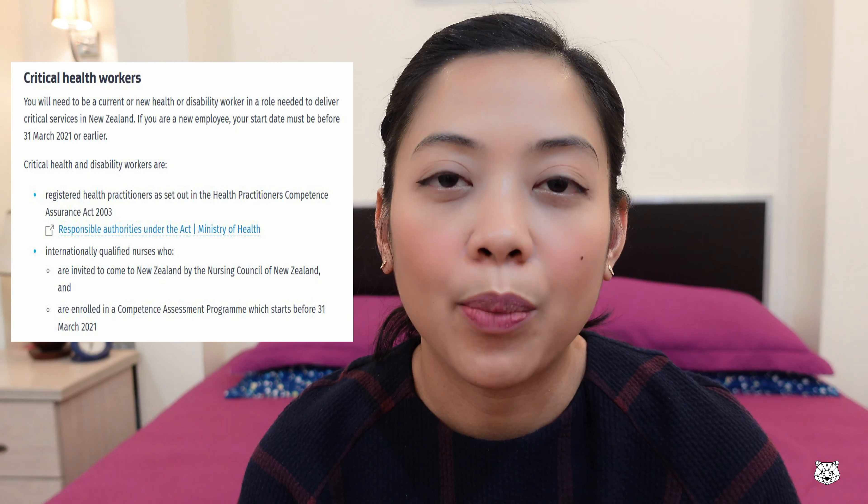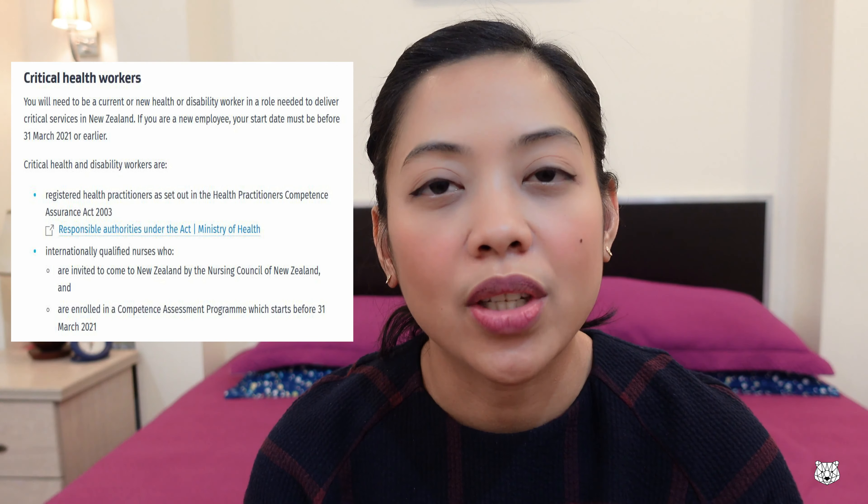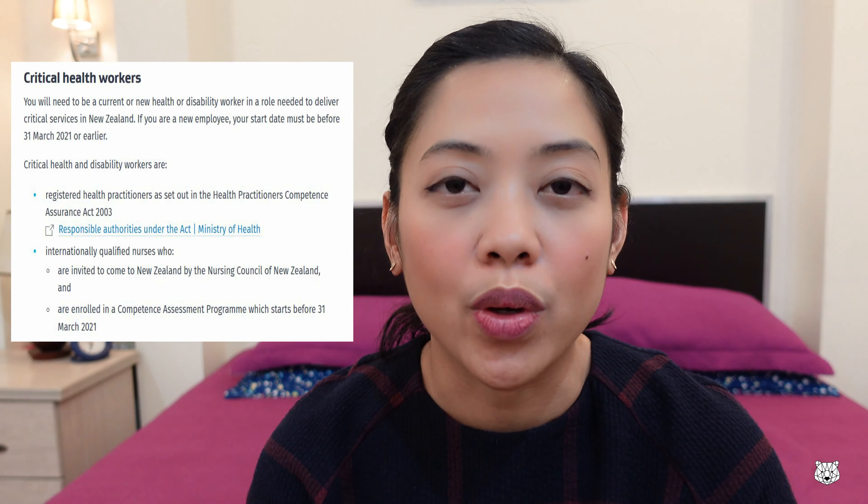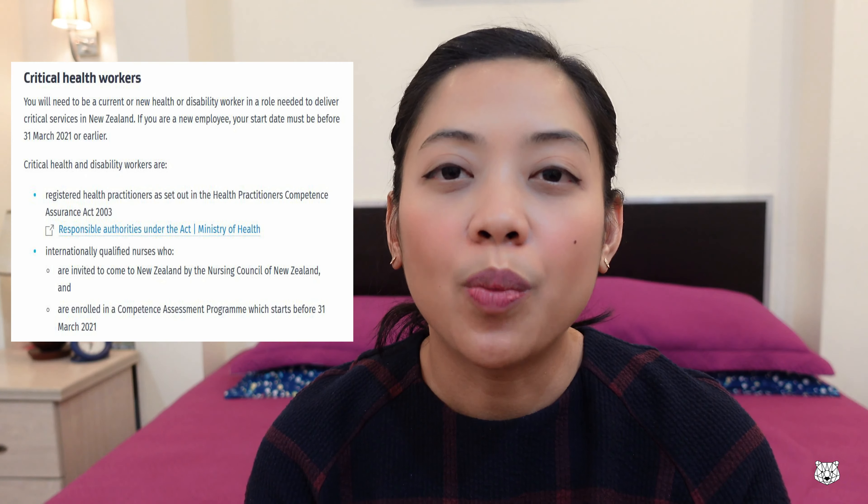You need to always check the Immigration New Zealand website to see if you are eligible to apply for your visa. The schedule on Immigration New Zealand for IQNs who can apply is for those with a Competency Assessment Program starting January to March 2021. For April onwards, you cannot yet lodge your Expression of Interest or apply for a visa. So before you apply for a Visitor's Visa, you need to first apply for an Expression of Interest — you can no longer directly apply for a visa. Currently, you need to make an Expression of Interest first.